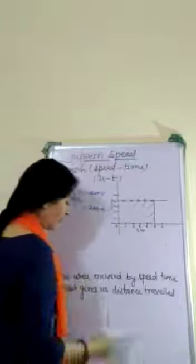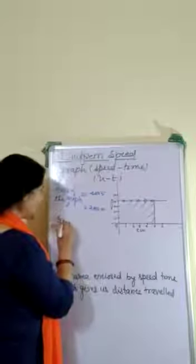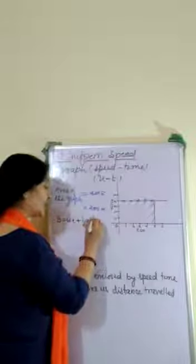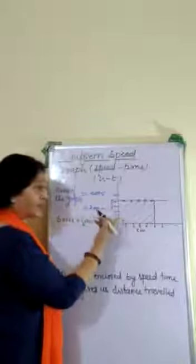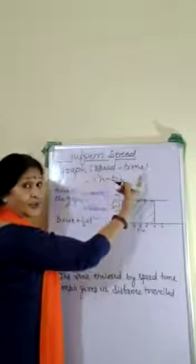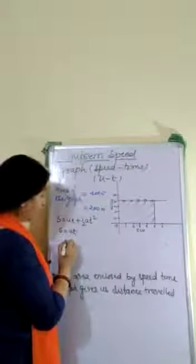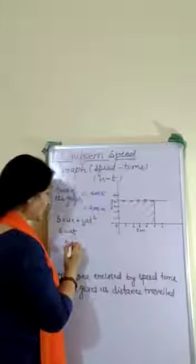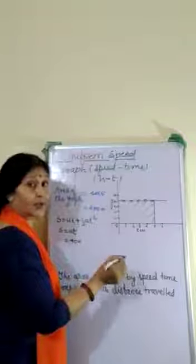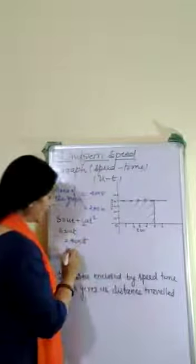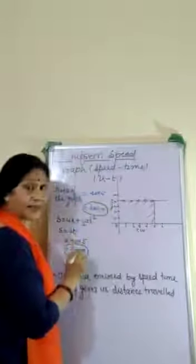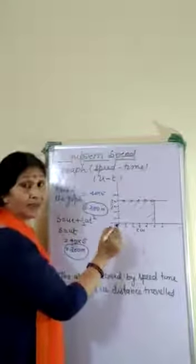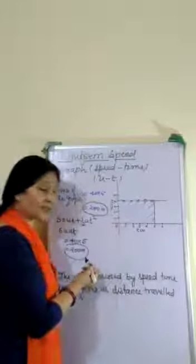Now let us see. We know the equation: S = ut + ½at². Here, u is the initial speed, a is acceleration, and t is time. Here, acceleration is 0 because the speed is uniform, so the formula reduces to only S = u×t. In this case, the speed is 40, and we have to calculate the distance traveled for 5 seconds, so S = 40 × 5 = 200 meters. This amount and the area are the same. Thus, the area under the graph plotted between speed and time gives us distance traveled.